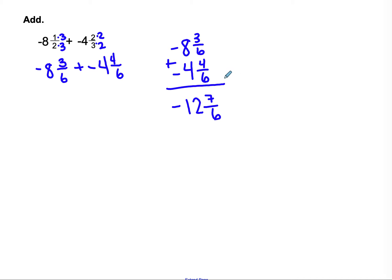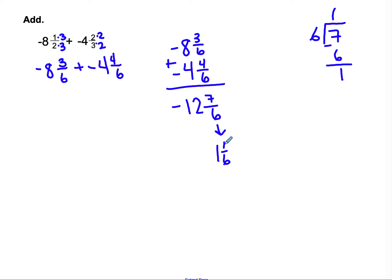I have a problem: 7 sixths is greater than 1 — that's an improper fraction. 6 goes into 7 one time with 1 as a remainder, so that's 1 and 1 sixth. Now I need to combine: I had negative 12 and the fractional part is 1 and 1 sixth. Since all of this was negative, it's like doing negative 12 plus negative 1 and 1 sixth, giving a final answer of negative 13 and 1 sixth.